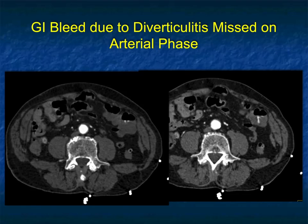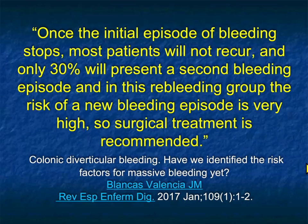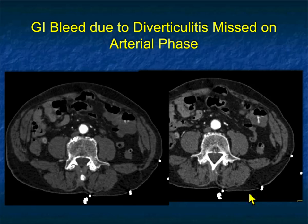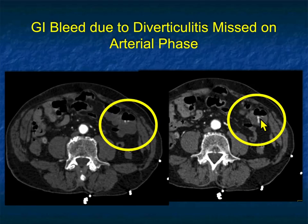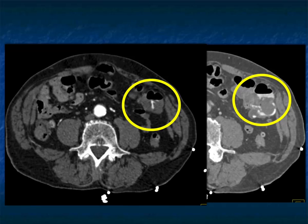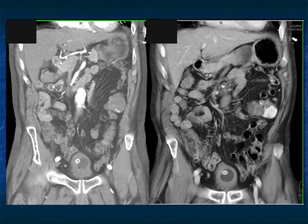Just like with the small bowel and stomach cases, arterial phase is good — you can see this high density here. You're not really going to worry that it's foreign matter, but you should look more carefully. There it is as you go to the coronal view, going from arterial to venous. There's something here you should be able to call, but look how much more obvious it is, how much more extensive it is. This is why venous imaging on top of arterial imaging for GI bleeding is so important.